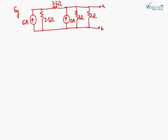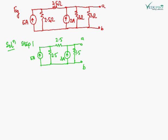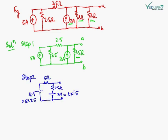We will take one example. Using the source transformation method, we have to convert this complex circuit into a single source circuit. We can see there is a current source, and parallel to it there are two resistances: three ohm and three ohm connected in parallel. I replace these two resistances with a single equivalent resistance of 1.5 ohm.